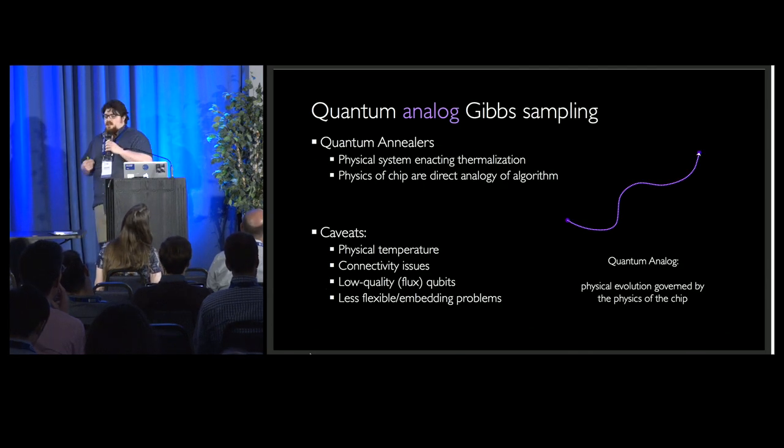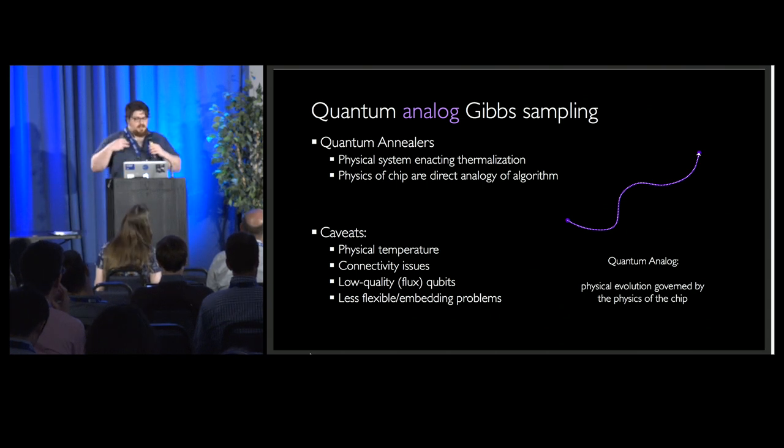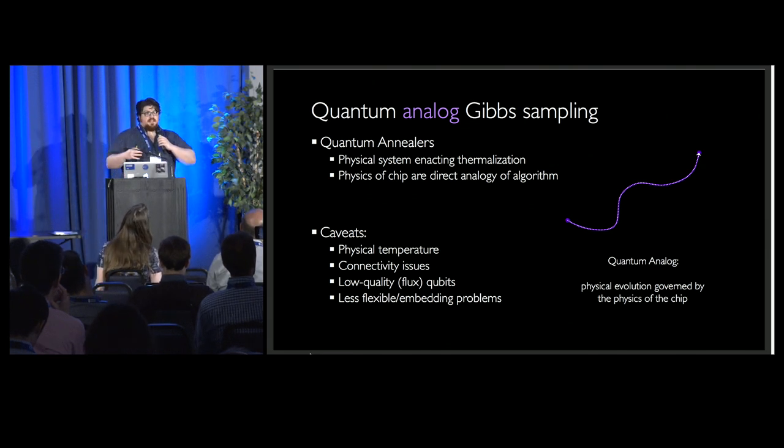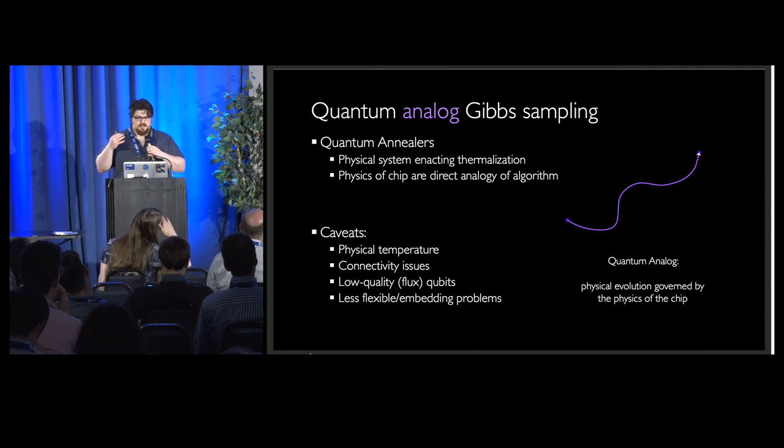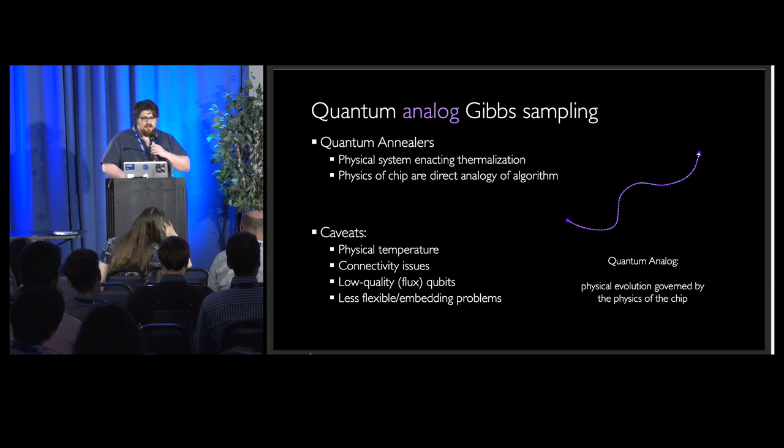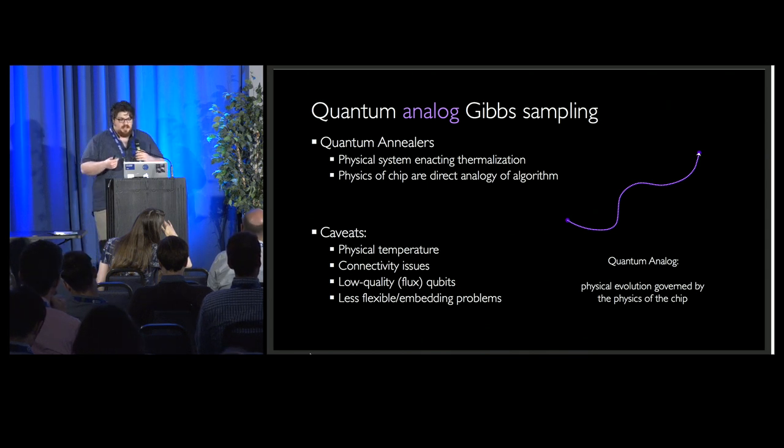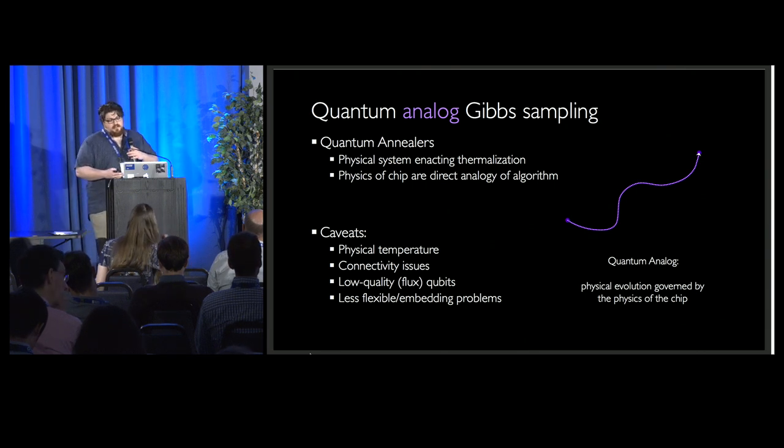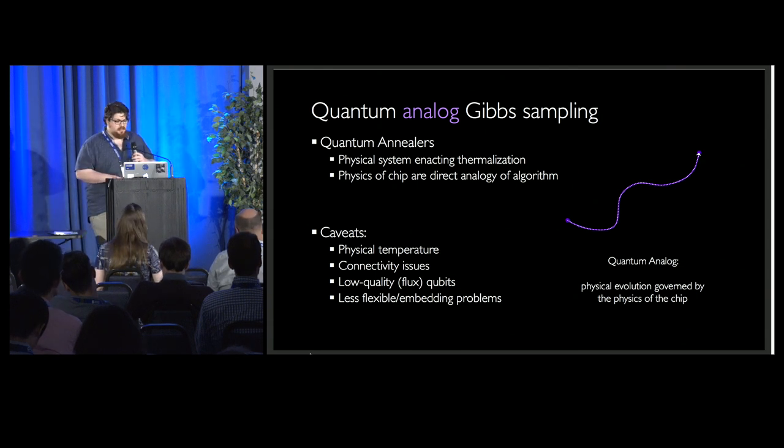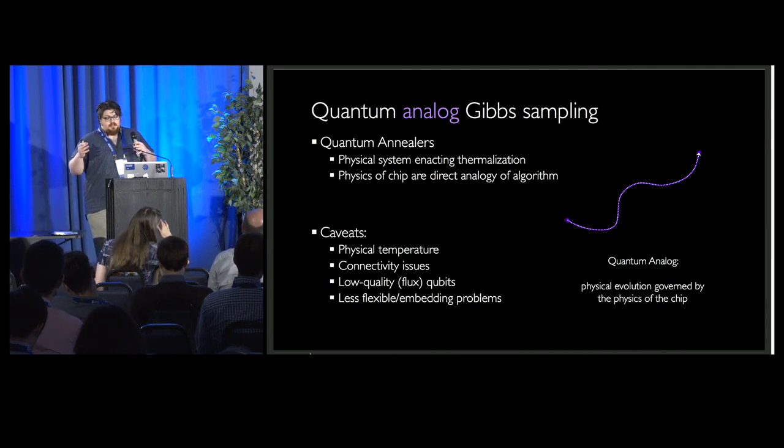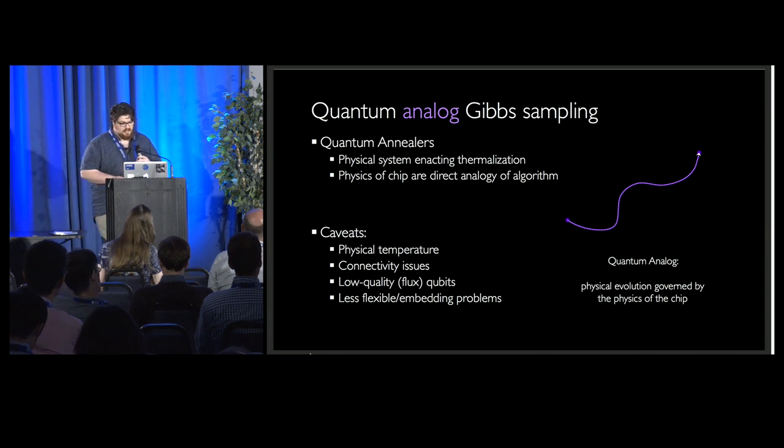So in analog computing, you do Gibbs sampling. It's an analogy to the system, to the algorithm you're trying to do, right? The physics of the system is enacting the physics that you're trying to simulate. The physics of the chip are in direct analogy with the algorithm. Your time evolution is represented as the smooth path of evolution, it's analog. Caveats: because it's so close to the algorithm you're trying to do, it's less flexible. There's problems with physical temperature, because you're bounded by how cool you could cool off your chip. You have to connect things directly, which is really hard. And because you have to have this connectivity, you don't have a choice but to use qubits that are pretty widespread. So you get a lot of noise because they're macroscopic and anything pretty big is gonna thermalize. And there's all sorts of problems on how to embed your problem on the annealer.